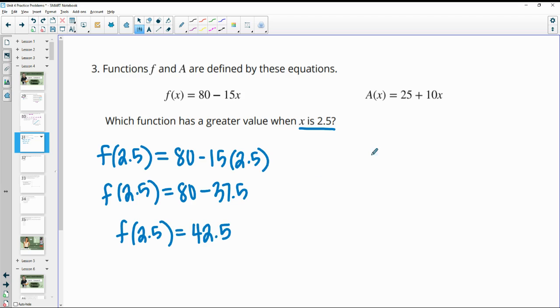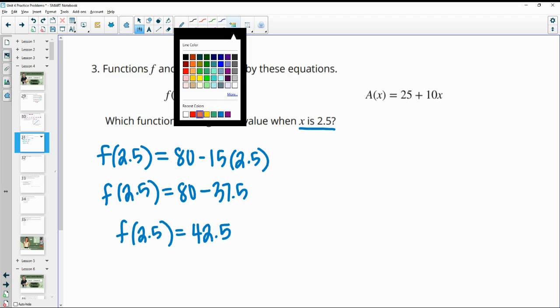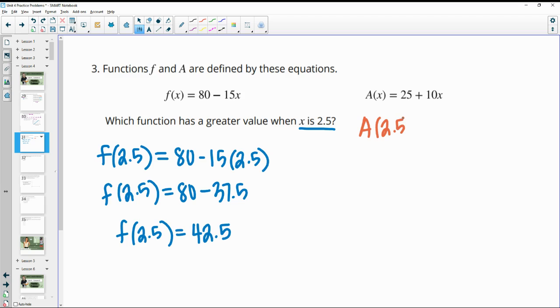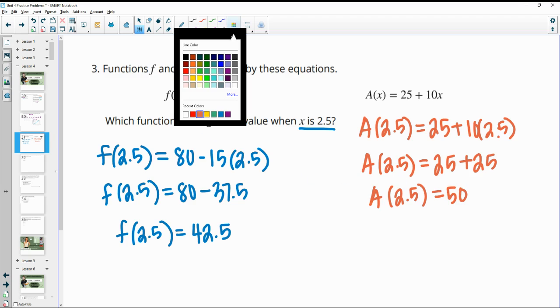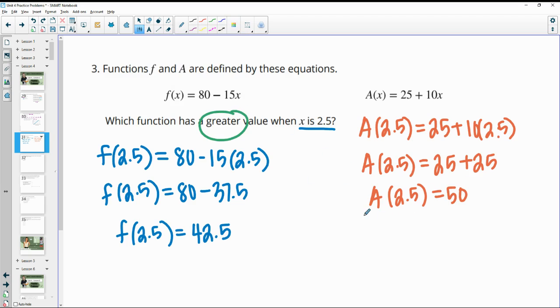So then we'll plug 2.5 into the a function. So a of 2.5 is equal to 25 plus 10 times 2.5. So then we'll do 10 times 2.5, which is 25. And then 25 plus 25 gives us 50. And it asked us which one is greater. And a of 2.5 is 50, which is larger than 42.5. So a of 2.5 is greater than f of 2.5. So a was our answer.